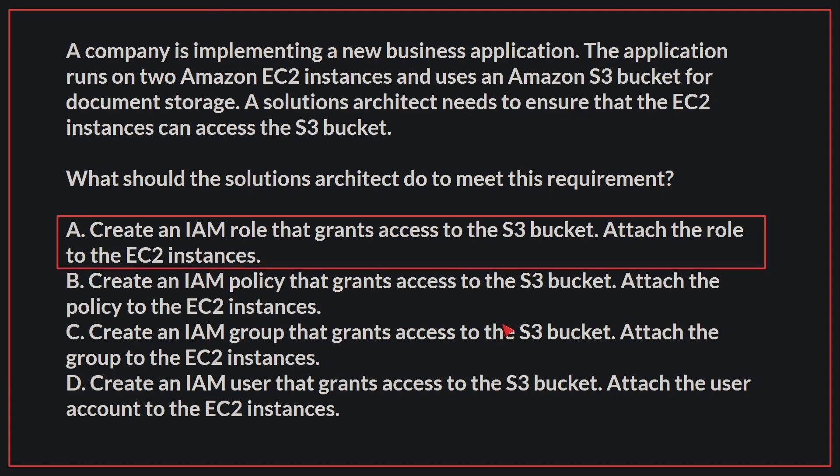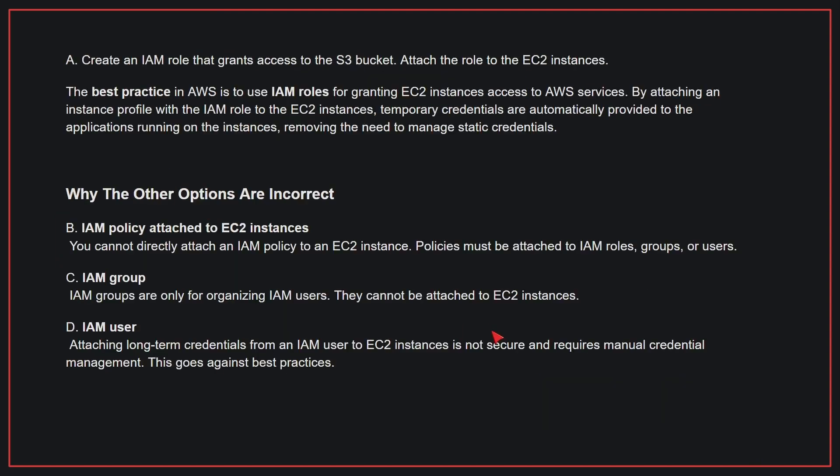The correct answer is A: Create an IAM role that grants access to the S3 bucket and attach the role to the EC2 instances. The best practice in AWS is to use IAM roles for granting EC2 instances access to AWS services. By attaching an instance profile with the IAM role to the EC2 instances, temporary credentials are automatically provided to the applications running on the instances, removing the need to manage static credentials.